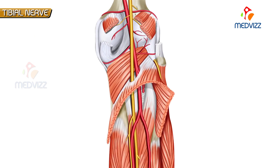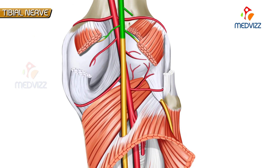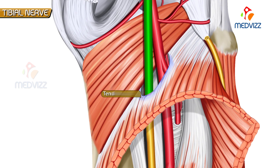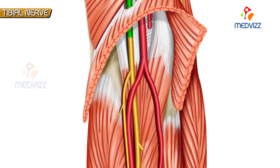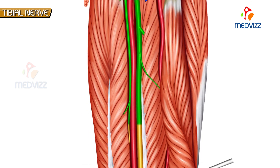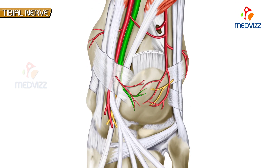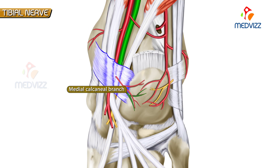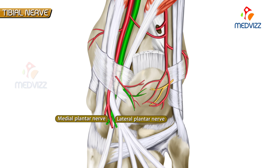From the popliteal fossa, the tibial nerve enters the posterior compartment of the leg by passing deep to the tendinous arch of the origin of the soleus, along with the posterior tibial vessels. In the leg, the tibial nerve is medial to the artery at first, then crosses posterior to the artery from medial to lateral side, and runs along the lateral side of the artery. Just above the flexor retinaculum, the tibial nerve gives off medial calcaneal branches, and finally terminates deep to the flexor retinaculum by dividing into medial and lateral plantar nerves.